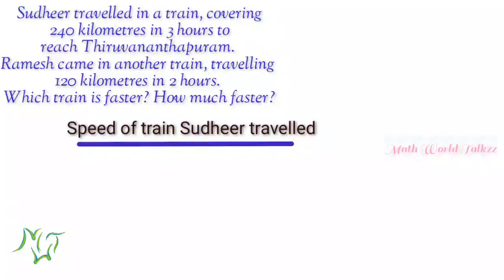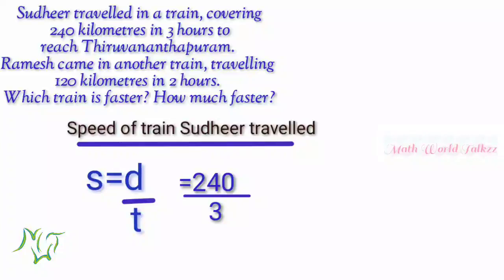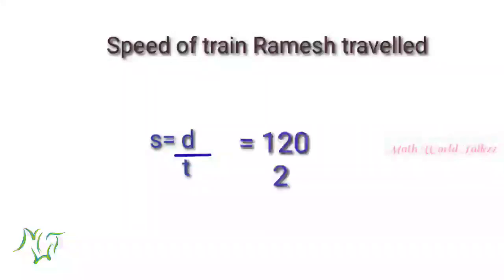First, we can find the speed of the train where Sudhir traveled. Speed is equal to distance by time. Substituting, we get 240 by 3, that is equal to 80. The distance is in kilometers and time is in hours, so the unit is kilometers per hour. For Ramesh's train, speed is equal to distance by time: 120 by 2 is equal to 60 kilometers per hour.